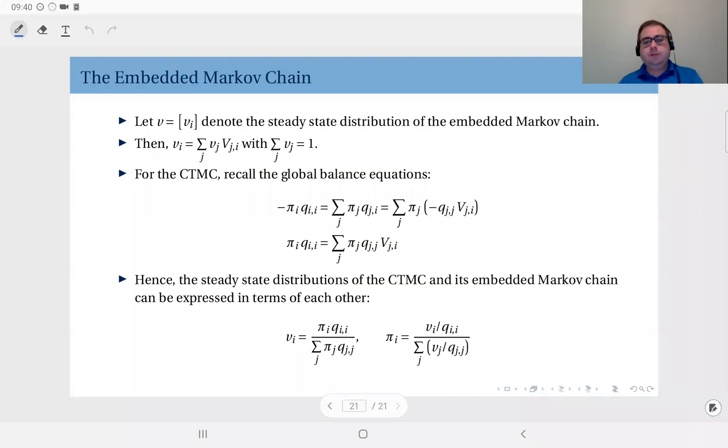If you have the steady state distribution of the embedded Markov chain, you can derive the steady state distribution of the continuous time Markov chain and vice versa. Let's denote by v the steady state distribution of the embedded Markov chain. Remember, this embedded Markov chain is a discrete time Markov chain, so it satisfies the